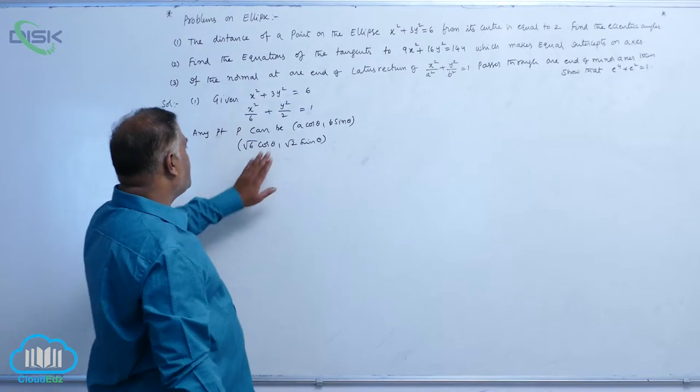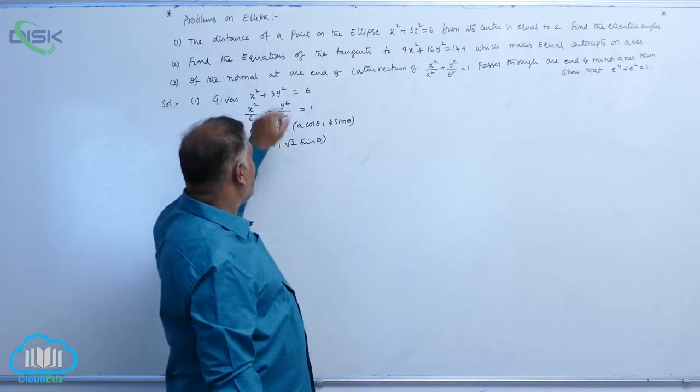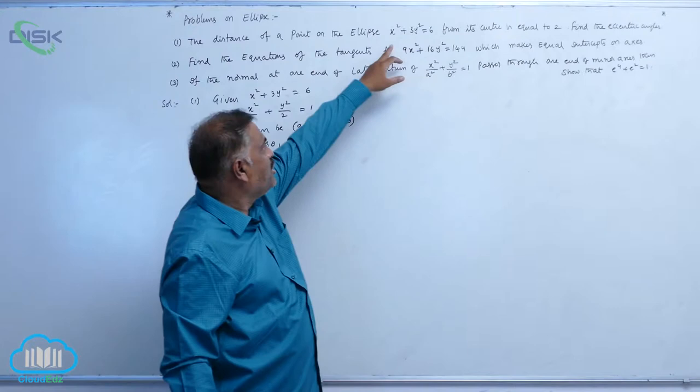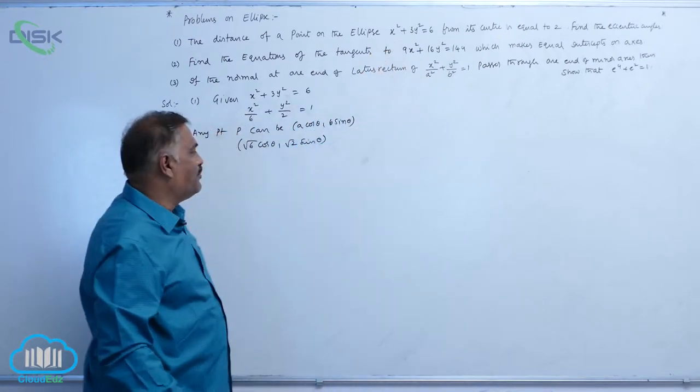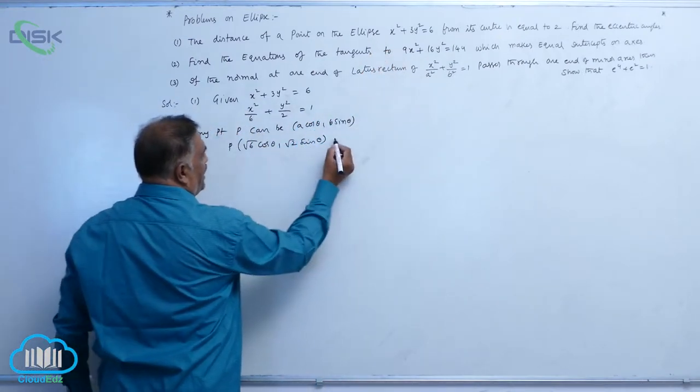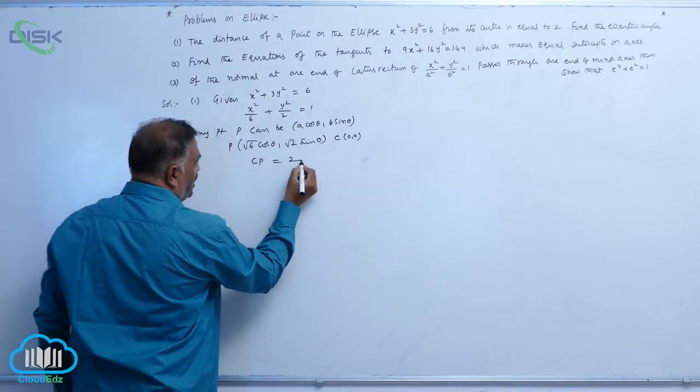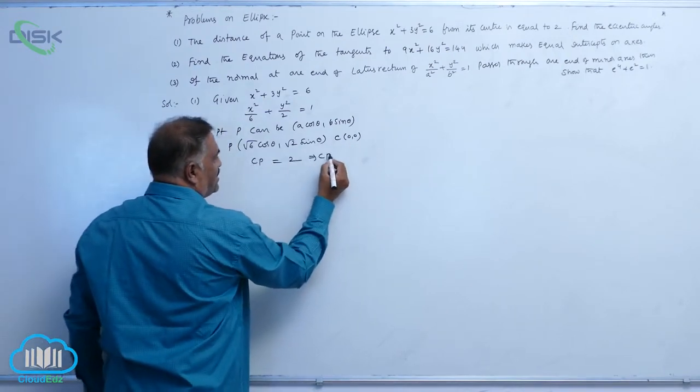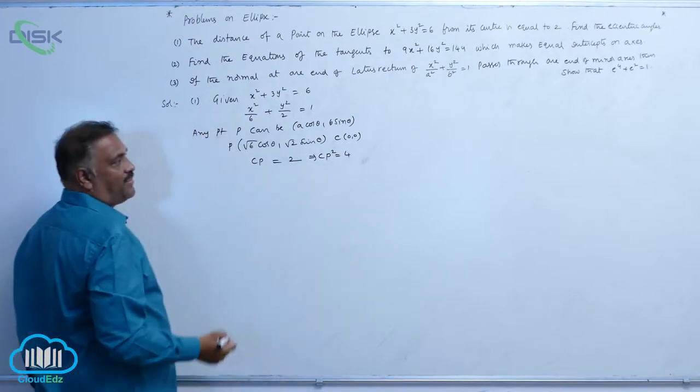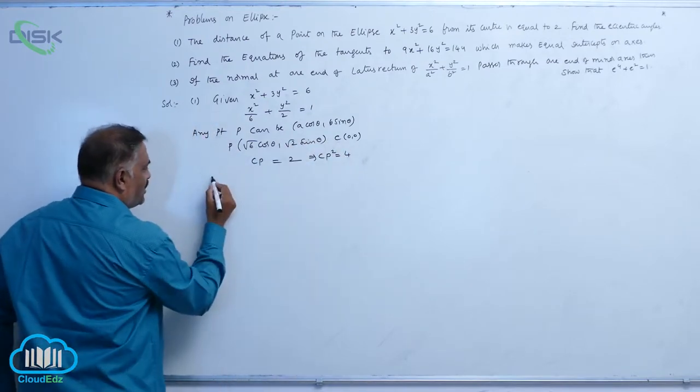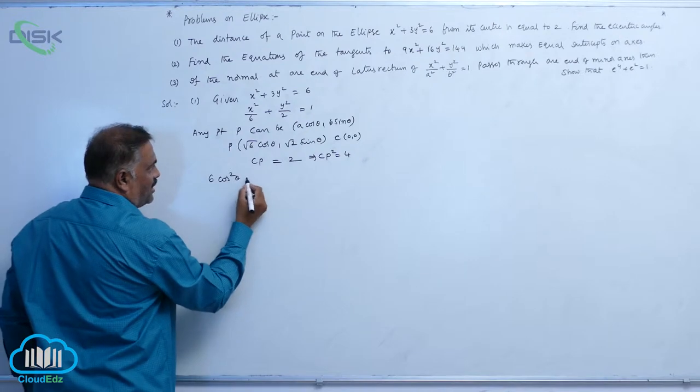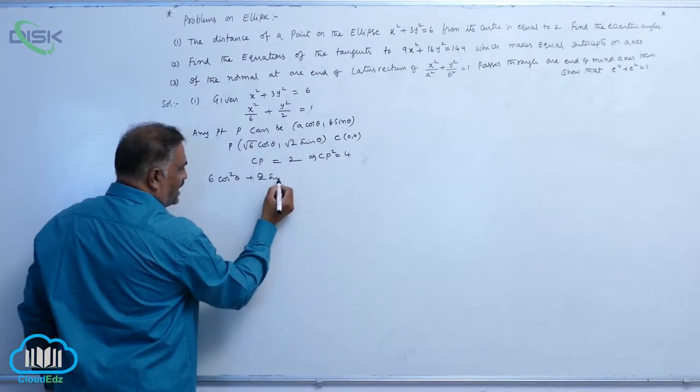Now this is any point. The distance of point P from its center - we know that center of the ellipse is 0, 0. So this is point P, center 0, 0. It is given CP equal to 2, implies CP square equal to 4.